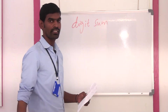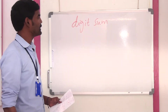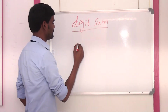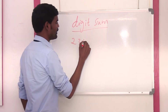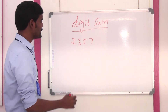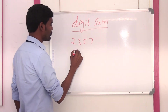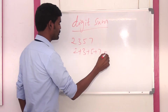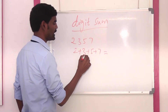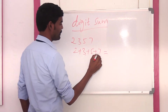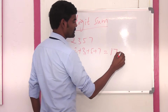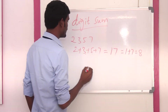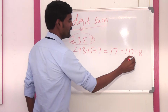This digit sum method is very useful to find simplifications easily. For example, 2357. The digit sum of 2 plus 3 plus 5 plus 7: 2 plus 3 is 5, plus 5 is 10, plus 7 is 17. So 1 plus 7 is equal to 8. The digit sum of 2357 is 8.